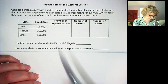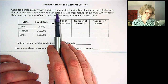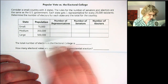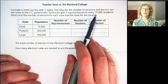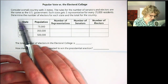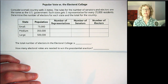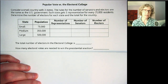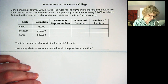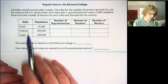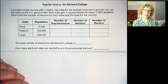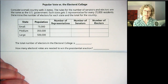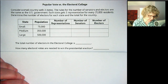Consider a small country with three states, but the rules are the same. The rules for the number of senators and electors are the same as the US government, and each state gets one representative for every 25,000 residents. We don't have a district — in the United States, the District of Columbia gets three electoral votes even though it's not a state — so we're not going to have any districts like that in these examples.